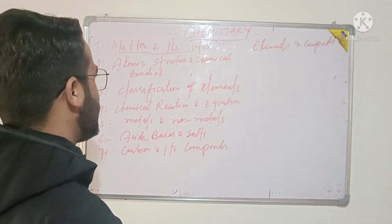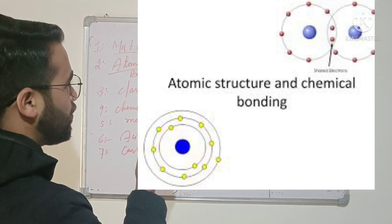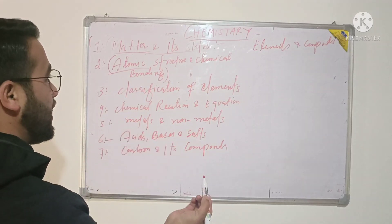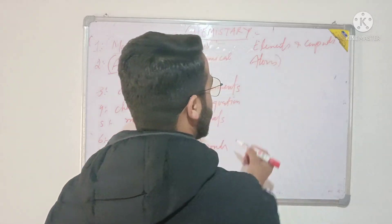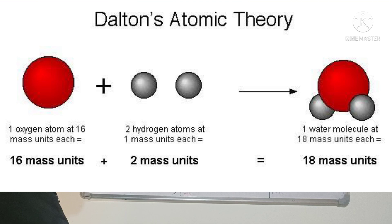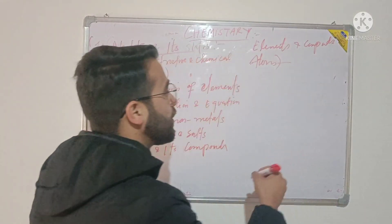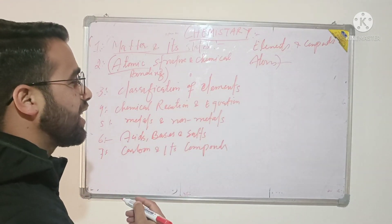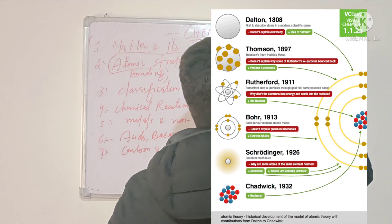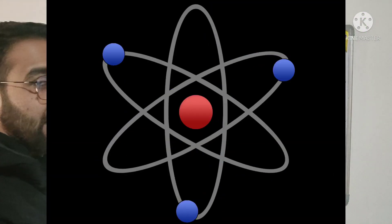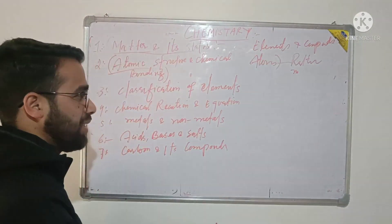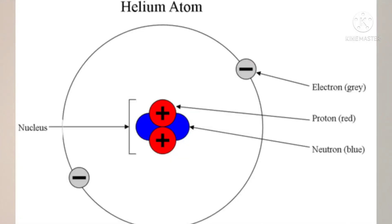The second topic is atomic structure — this is the most important topic in chemistry. There are many scientists associated with this topic. You have Rutherford, who discovered the nucleus. Then you have the proton and electron discoveries. You will study atomic number, mass number, proton, neutron, and electron.